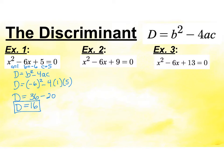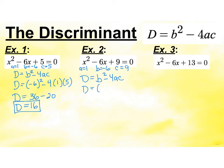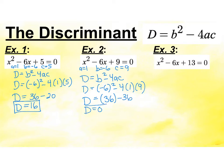I'm going to try it again with example two. a equals 1, b is negative 6, and c is 9. My discriminant is b squared minus 4ac. I definitely recommend writing the letters out first as we're starting to learn this. So my discriminant is parentheses negative 6 squared minus 4 times 1 times 9. So d equals 36 minus 36, and my discriminant here is 0.